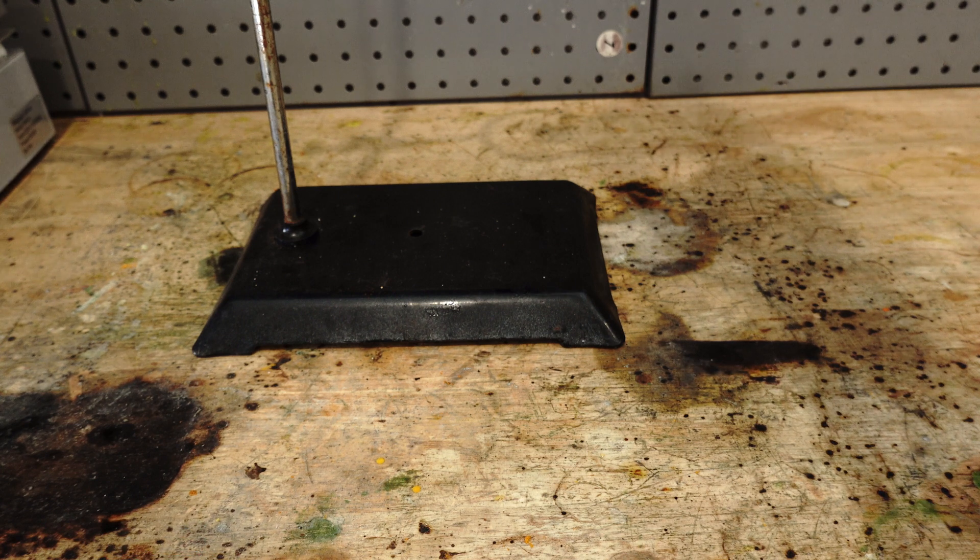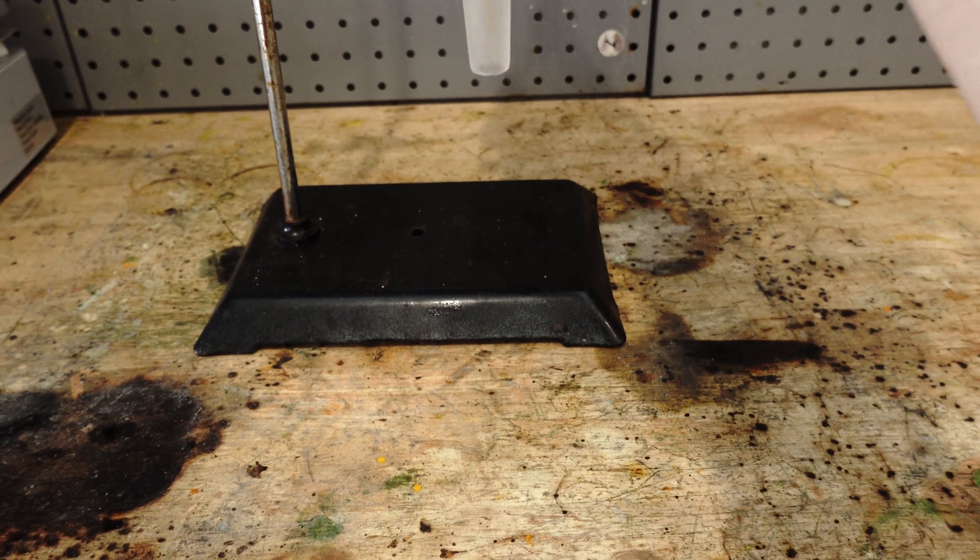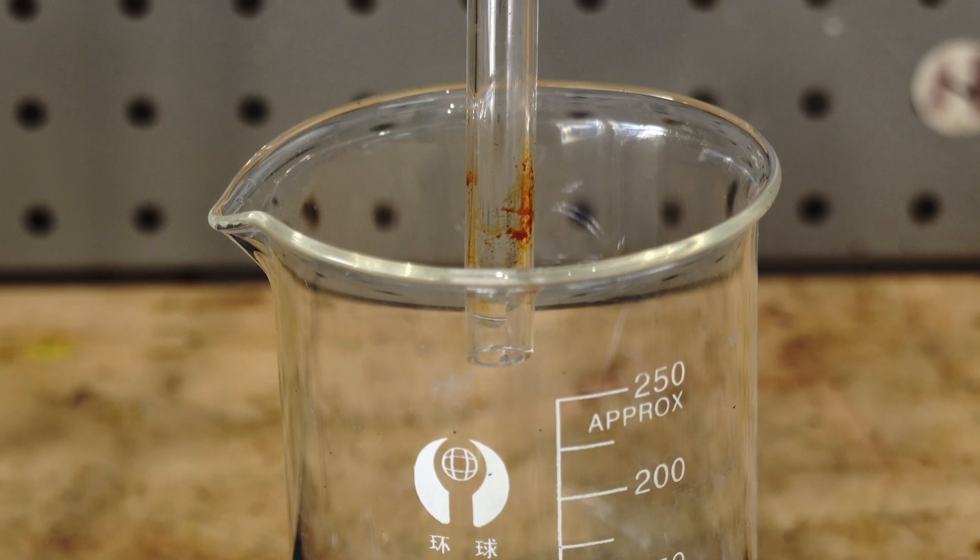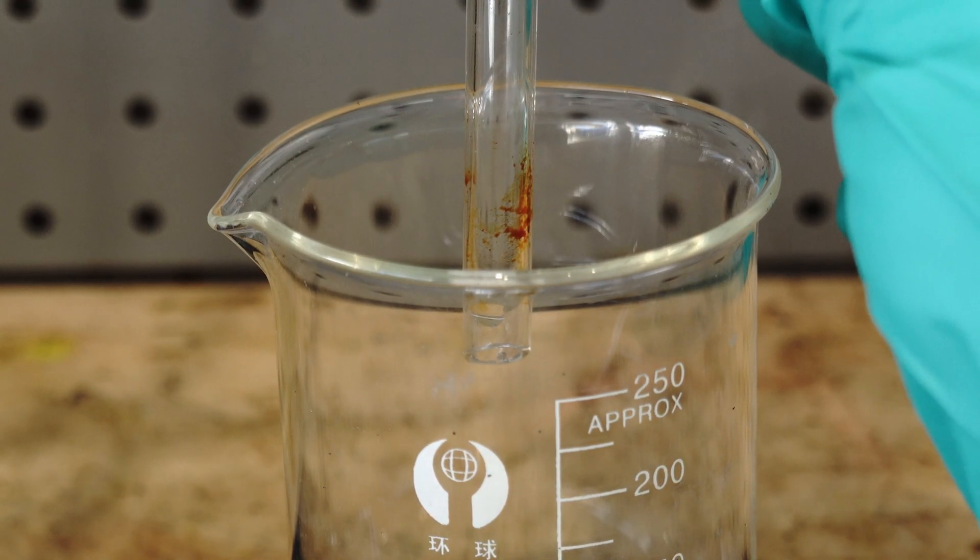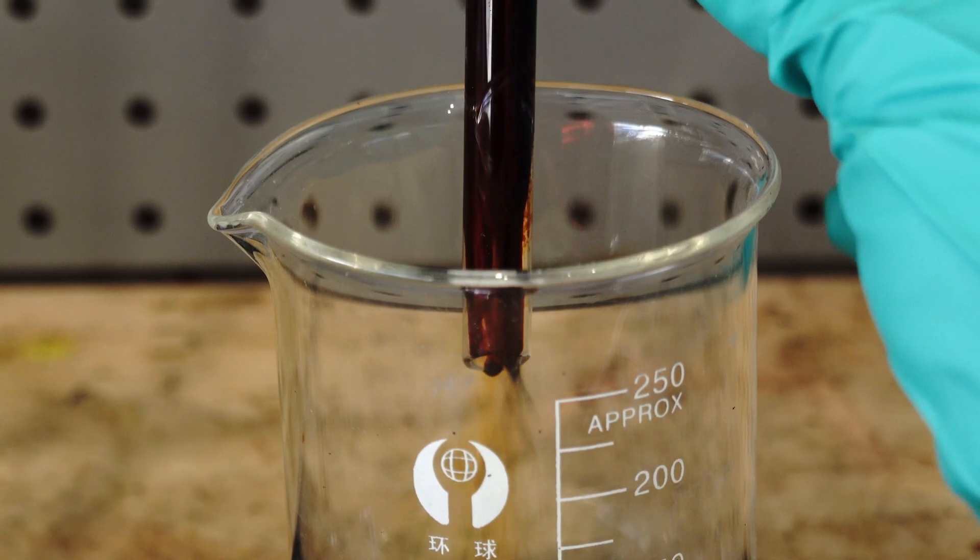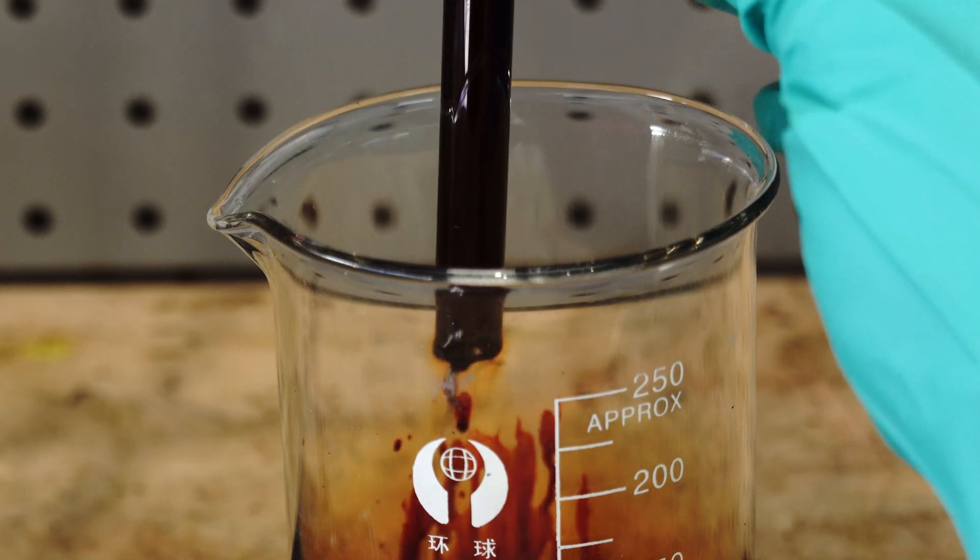We then let this mixture sit for about 10 minutes and separate into two separate layers. Since Bromine is two times as dense as sulphuric acid, we drain the bottom layer into a separate beaker. This is our Bromine.